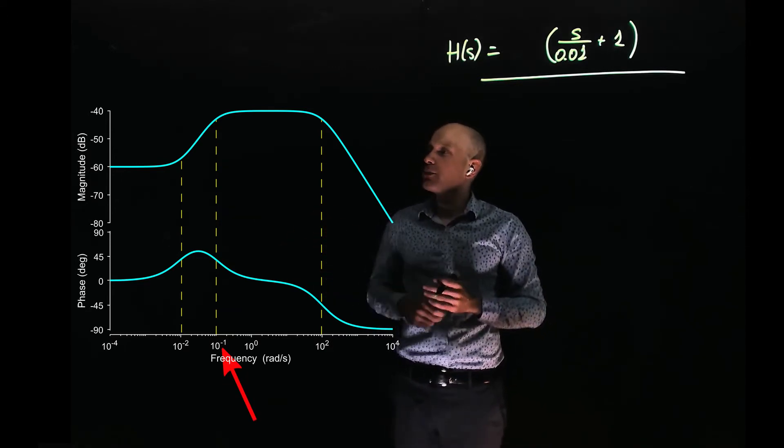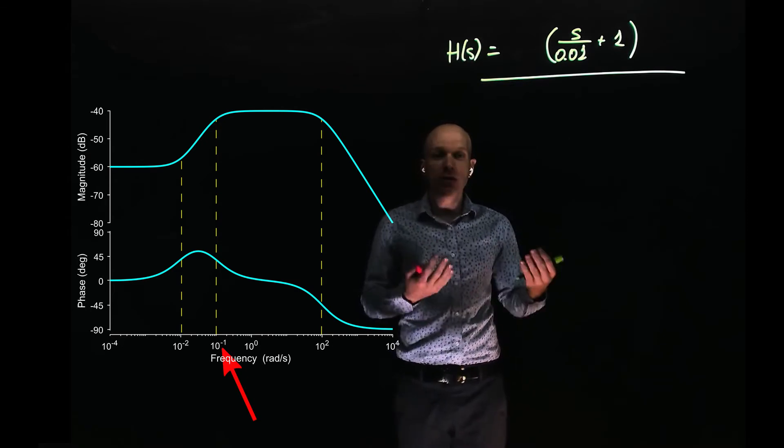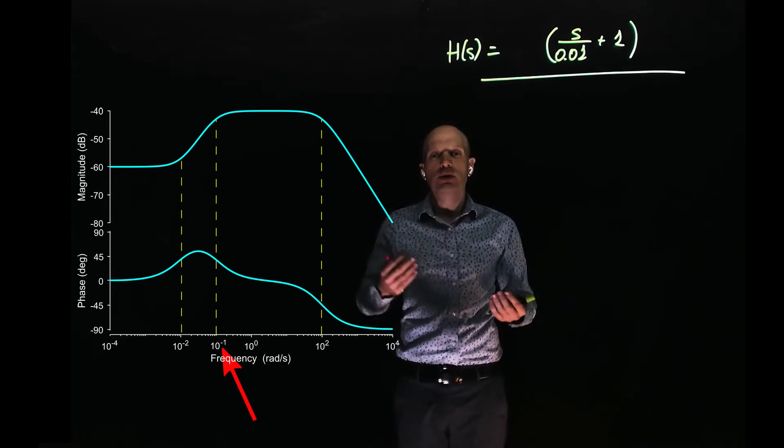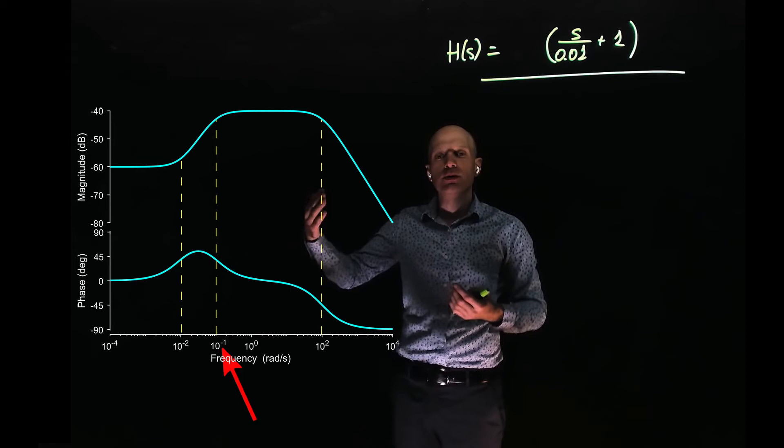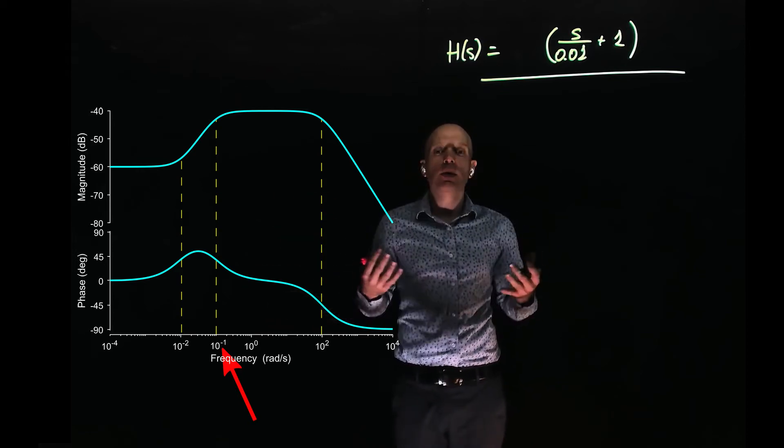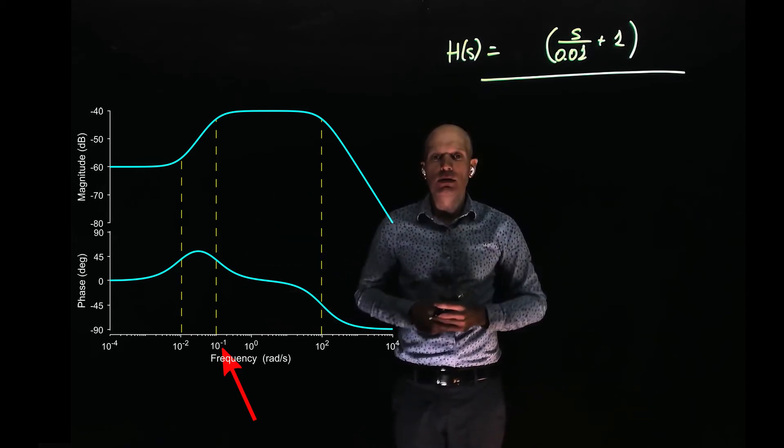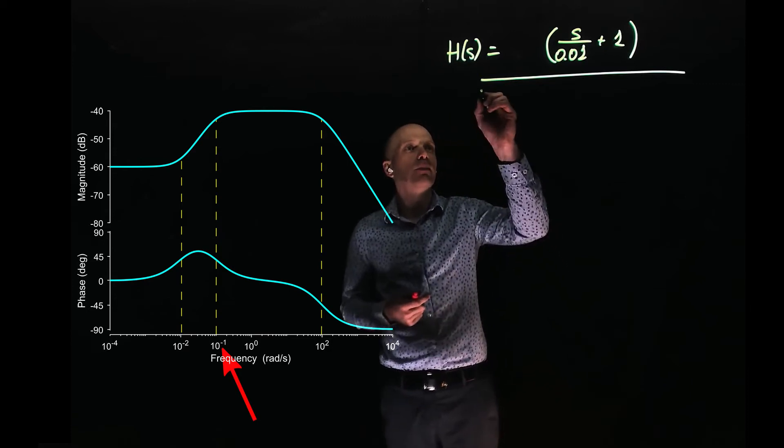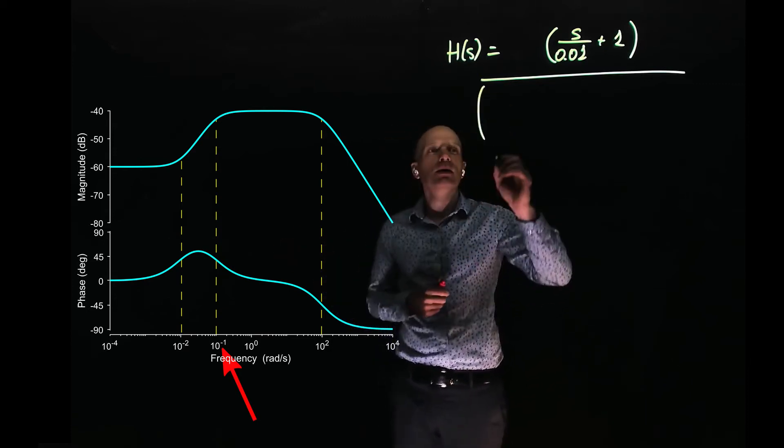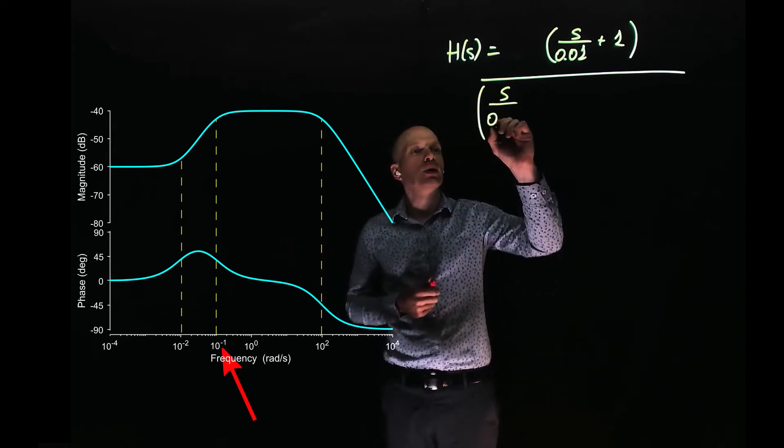The slope was going up by 20 decibels per decade, and now it's zero decibels per decade. So 20 decibels per decade was added to negative 20 decibels per decade. What adds negative 20 decibels per decade? A pole, of course, and the pole is located at 0.1 radians per second.